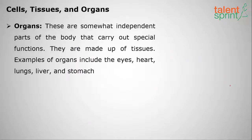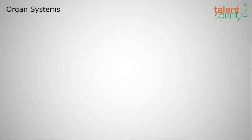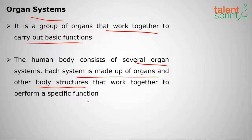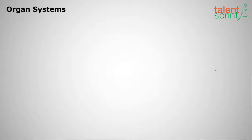Tissues make up organs — these are more independent parts of the body that carry out special functions. Examples of organs include the eyes, heart, lungs, liver, and stomach. A group of organs makes up an organ system. Each system is made up of organs and other body structures that have specific functions — just as cells, tissues, and organs each have their own roles.